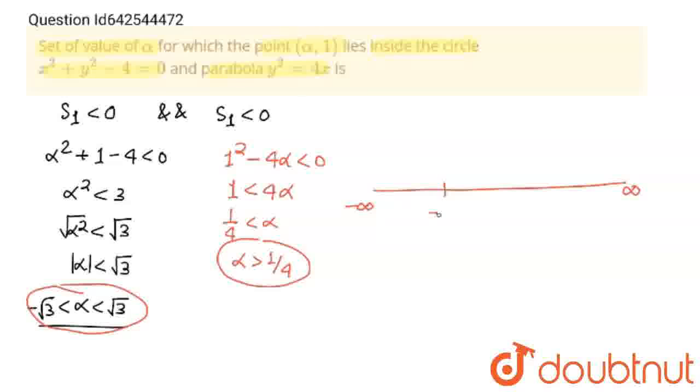I am going to take minus root 3 and plus root 3. So this is true between minus root 3 to root 3, and 1 upon 4 lies in between both these points, and alpha should be greater than 1 upon 4.